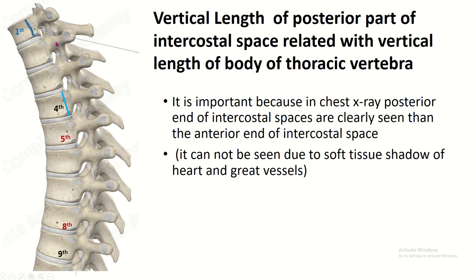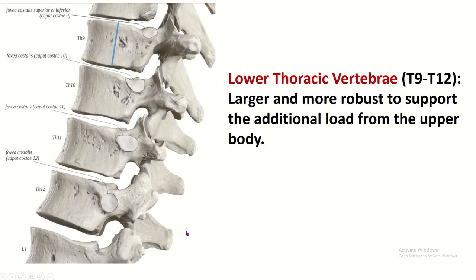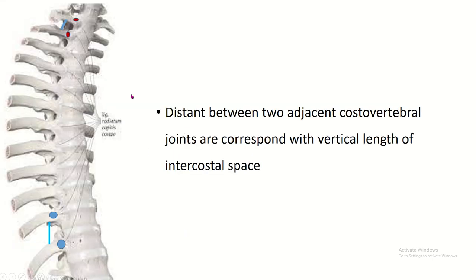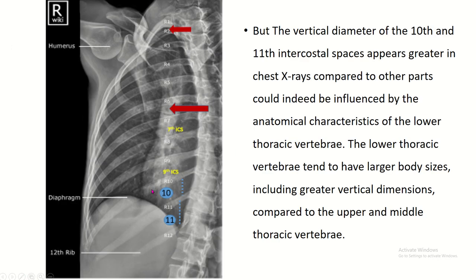The vertical length of the posterior part of the intercostal space is related to the vertical length of the body of the thoracic vertebra. The upper thoracic vertebra has a shorter vertical length than the lower thoracic vertebra. In the upper part the vertical length is less, but in the lower part the vertical length is longer because the body of the lower thoracic vertebra is longer. So on chest X-ray you can easily identify the 10th and 11th intercostal space by the wide gap between the lower thoracic vertebrae.